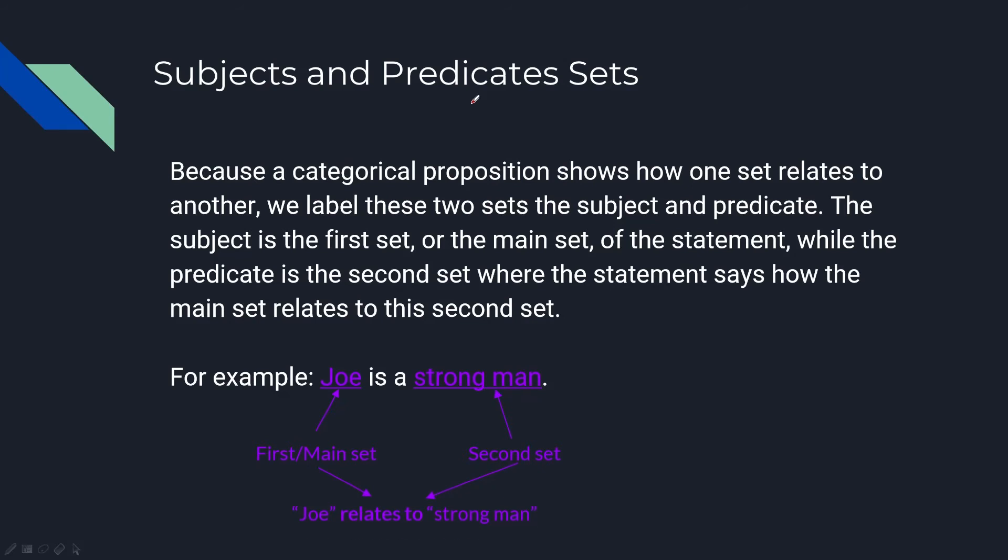Subject and predicate sets. Because a categorical proposition shows how one set relates to another, we label these two sets as the subject and predicate. The subject is the first set or the main set.